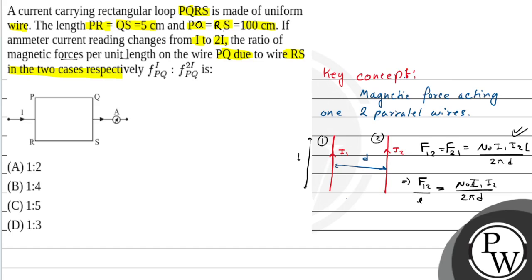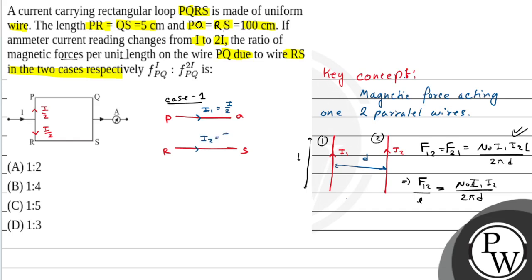We will find the magnetic force per unit length. In this question, the current I1 is the current in this branch and I2 is the current in the other branch. Since PQ and RS are parallel wires in the rectangular loop, in Case 1 with current I, the current I1 equals I/2 and I2 equals I/2.